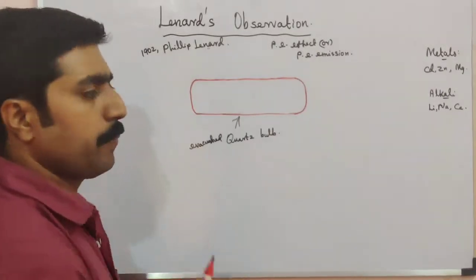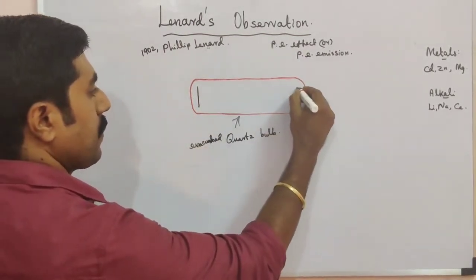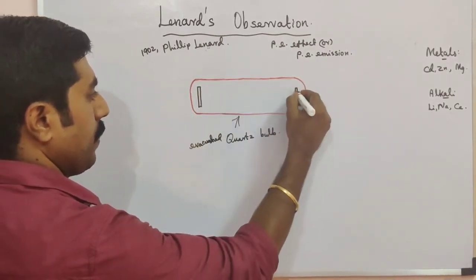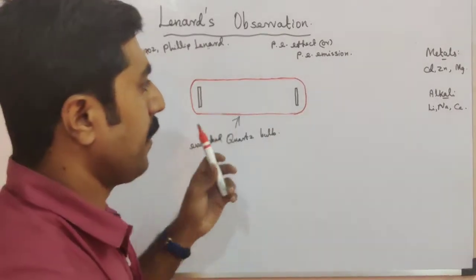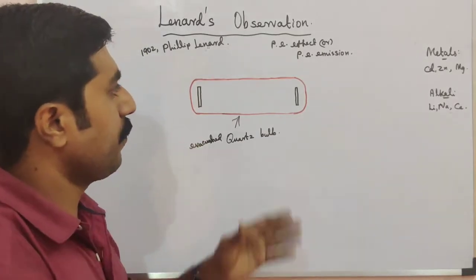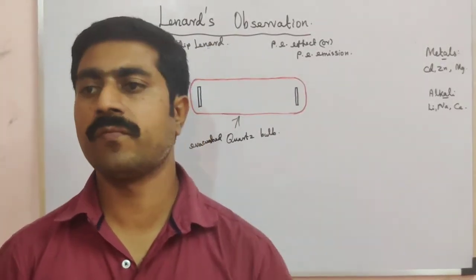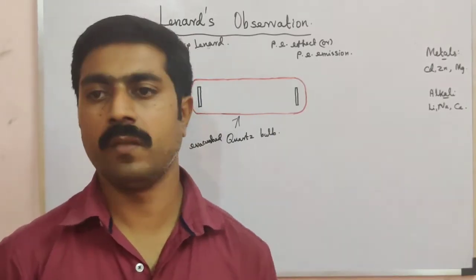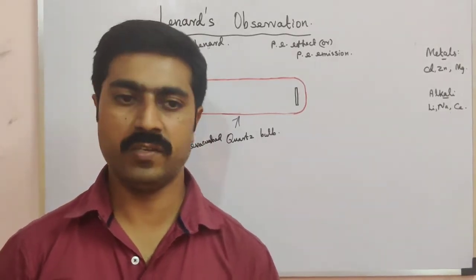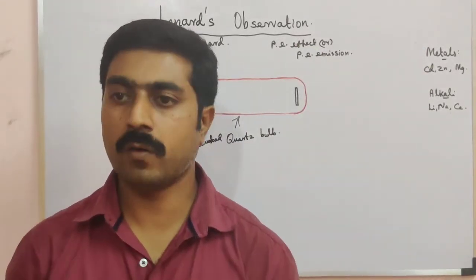He introduced two metal plates inside the evacuated quartz ball — one metal plate and a second metal plate. The metal plates used are cadmium. He used UV radiation. Photoelectric emission is the ejection of electrons from the metal surface under the influence of electromagnetic waves such as UV rays and visible light.